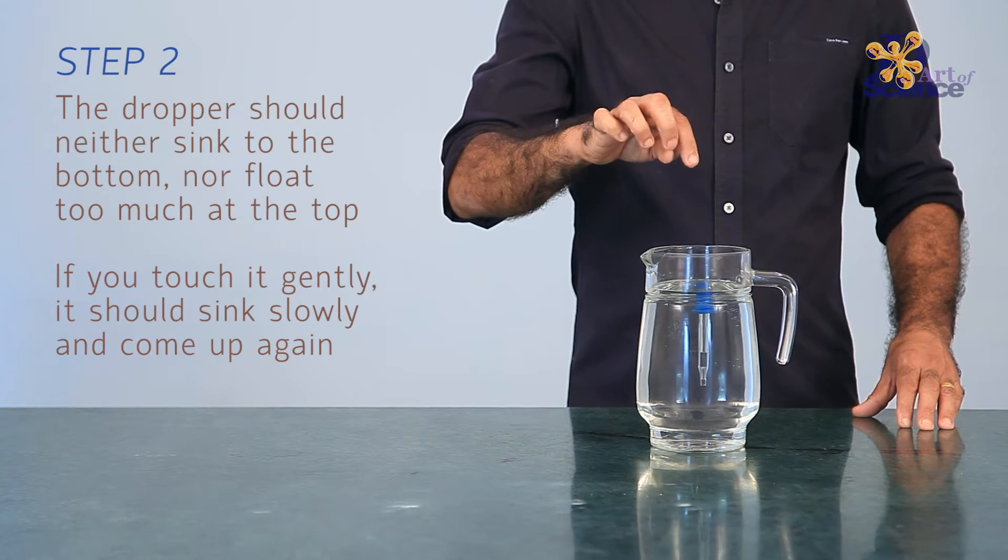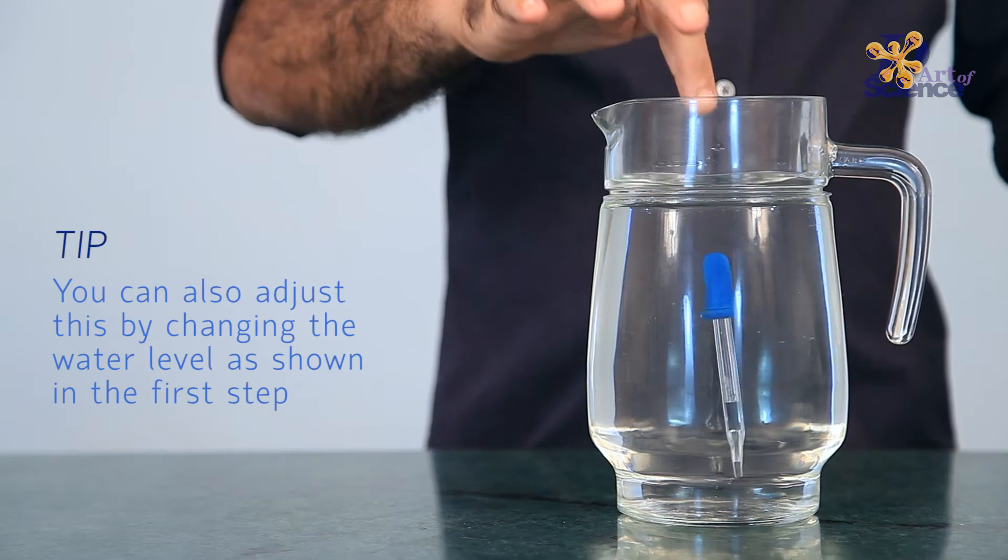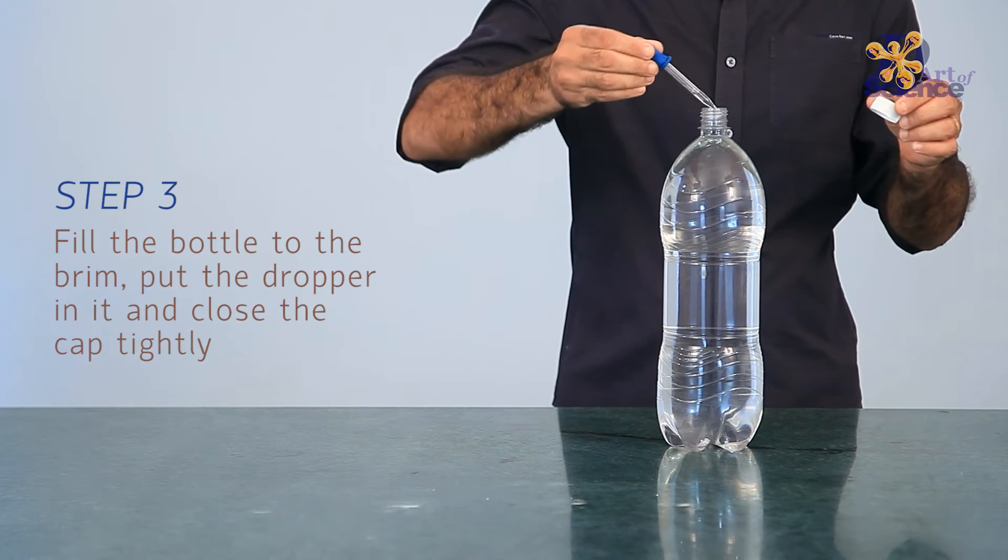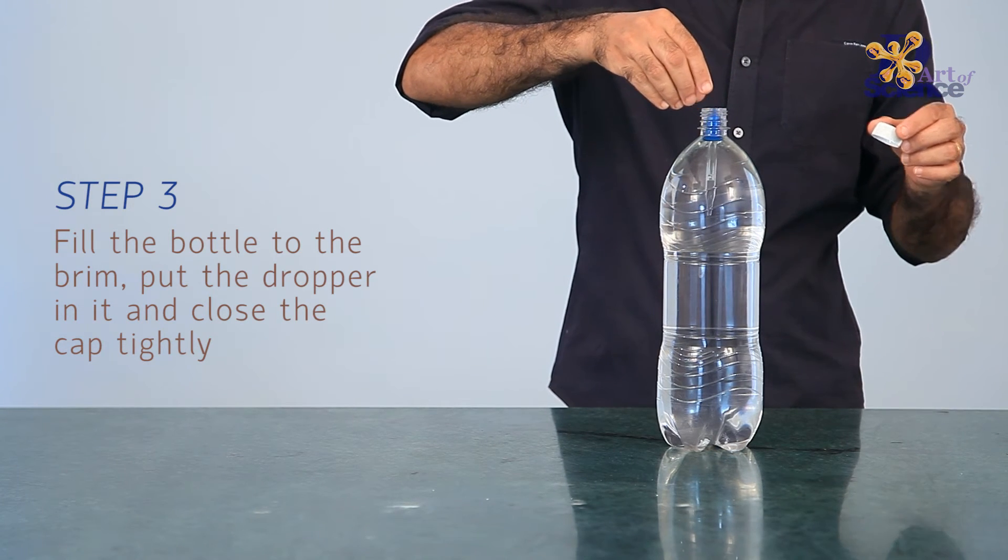So how does the diver move down? This happens by squeezing the bottle. When we squeeze the bottle, we increase the pressure on every part of the liquid as well as the dropper.